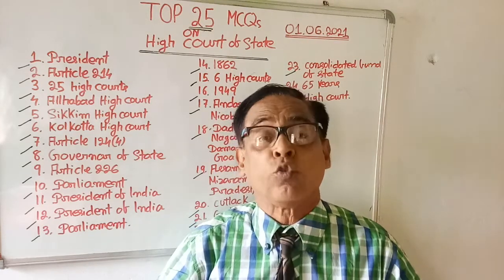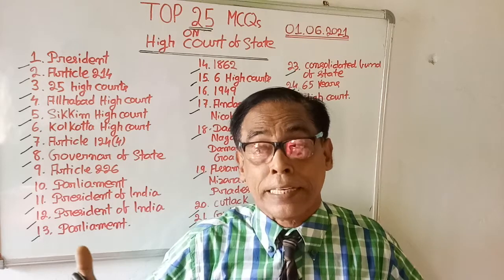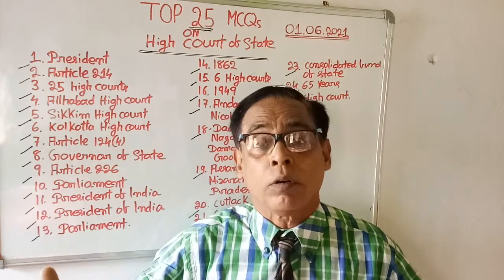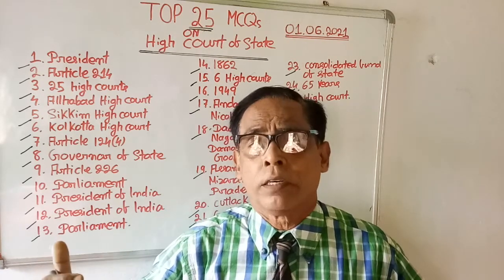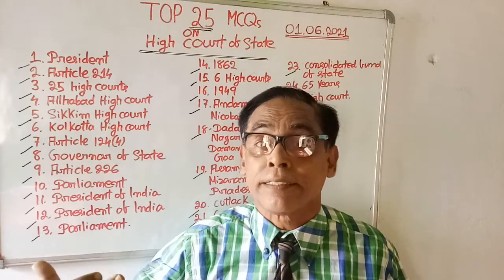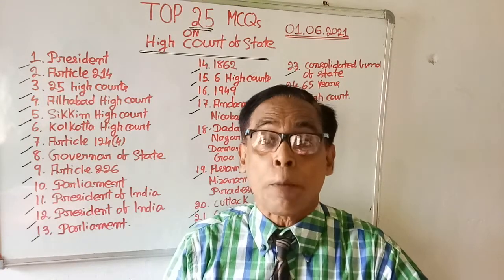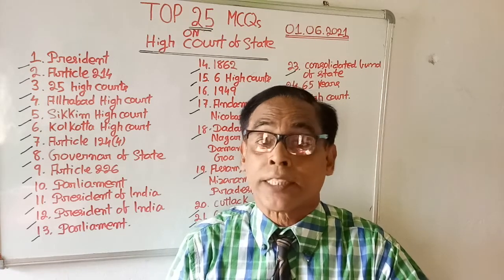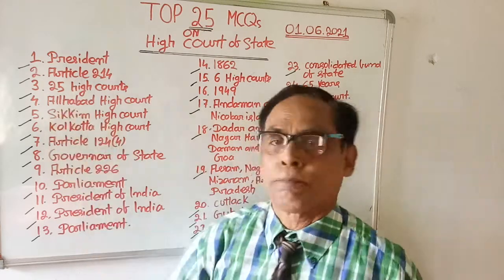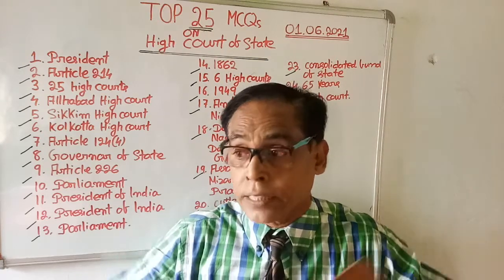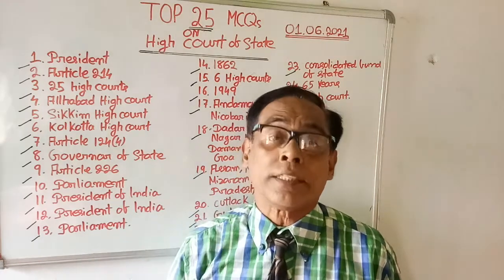Question number two: which article says there shall be a High Court for every state? Options are: Article 215, Article 216, Article 217, and Article 214. The right answer is Article 214 — on the basis of Article 214 there shall be a High Court for every state.